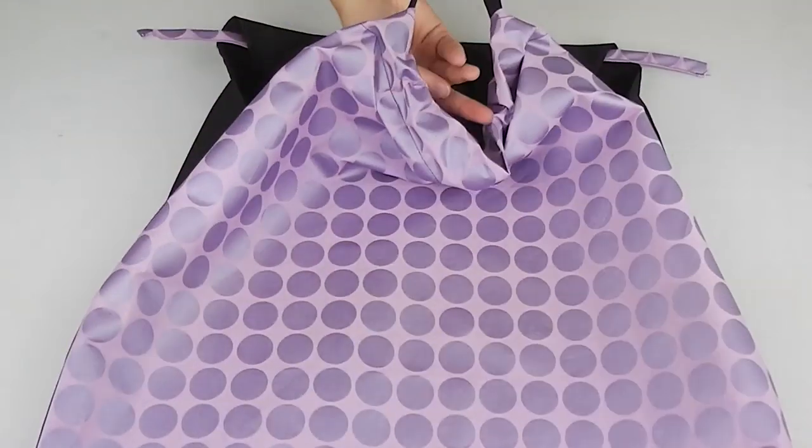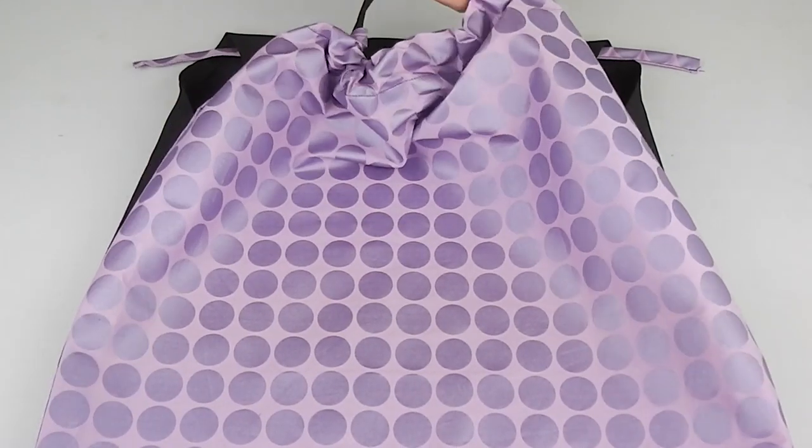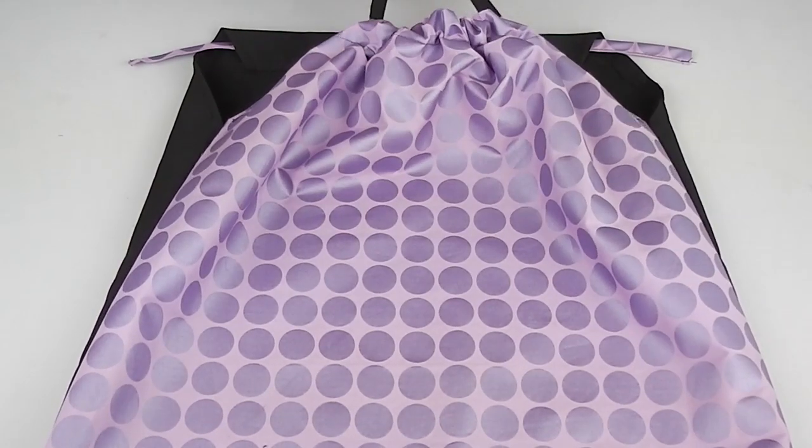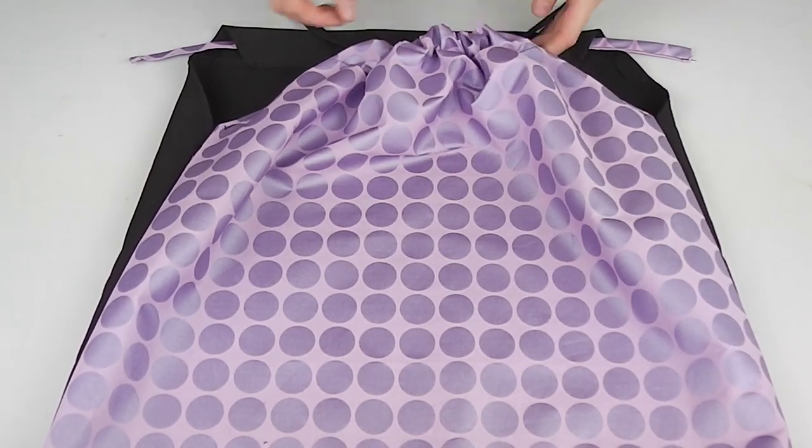To complete the dress hold each end of the ribbons and push the dress fabric into the centre of the ties to create a ruched effect at the neckline and a pleated effect down the centre of the dress.